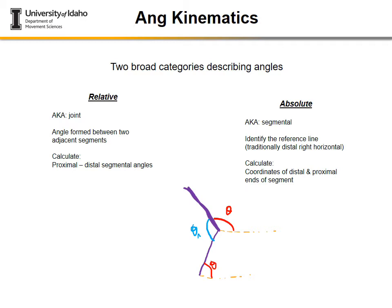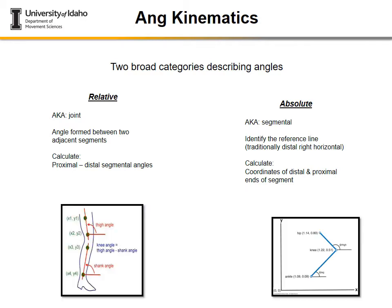Segmental or absolute angles can use different reference lines — sometimes a vertical reference, sometimes a proximal right horizontal. It's important to identify which reference is used. For example, the trunk is often measured from vertical to capture anterior or posterior tilt. Once you calculate both segmental angles — the thigh and the shank — you subtract them to obtain the joint angle, in this case the knee angle.